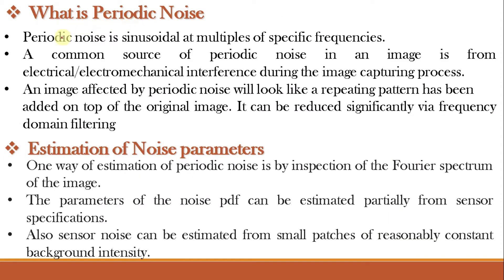What is periodic noise? Periodic noise is sinusoidal at multiples of specific frequencies that repeats itself. Periodic noise in an image typically arises from electrical or electromechanical interference during image acquisition. An image affected by periodic noise will look like a repeating pattern added on top of the original image. This periodic noise can be significantly reduced via frequency domain filtering, and it is the only spatially dependent noise considered in this chapter.